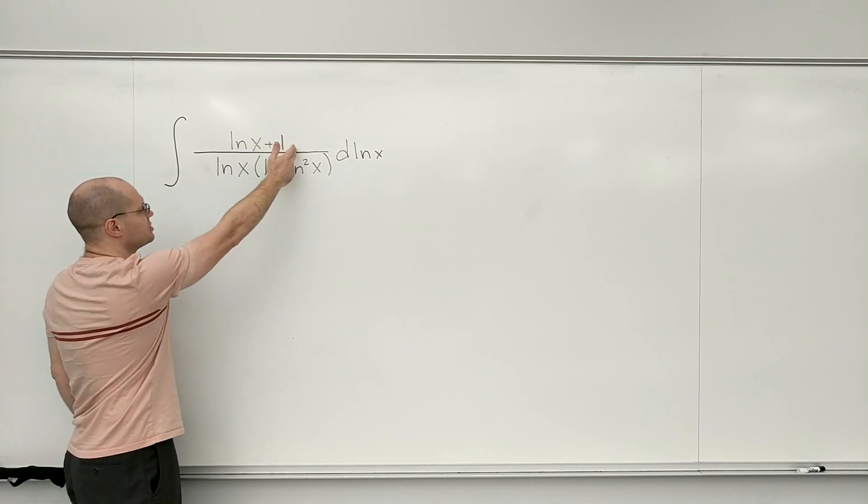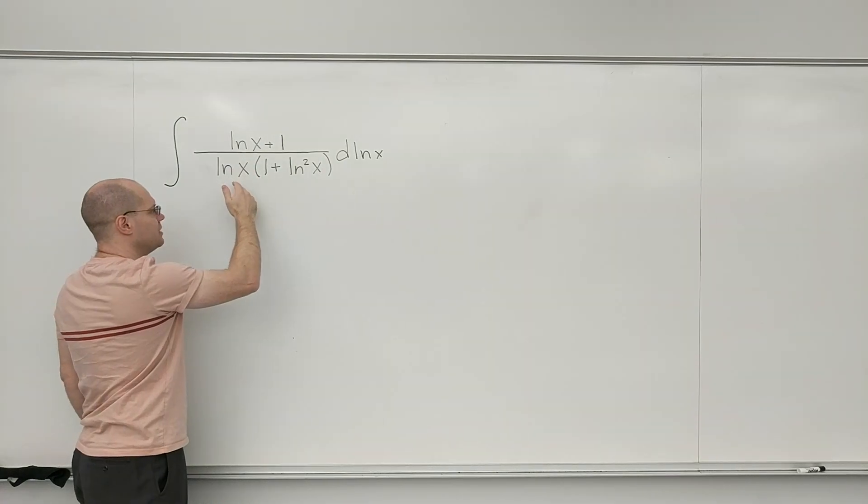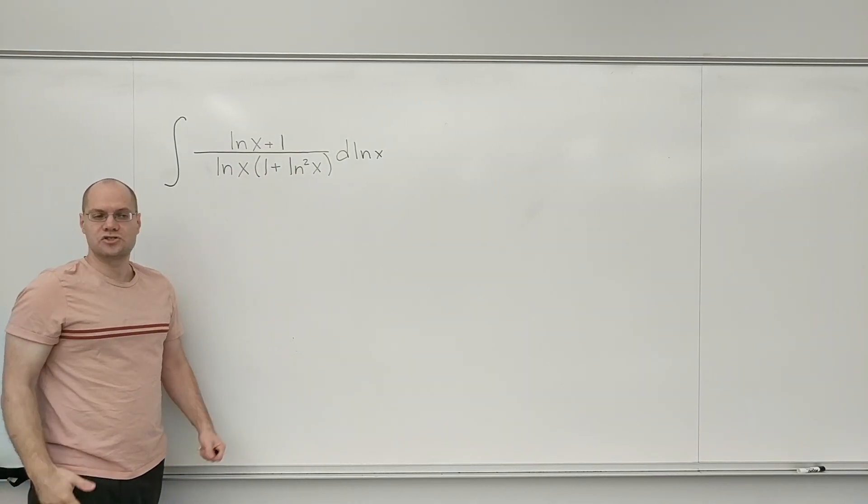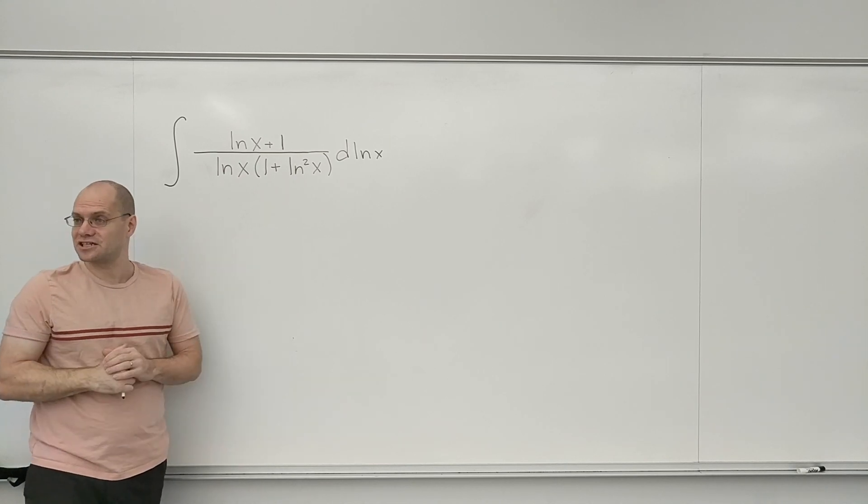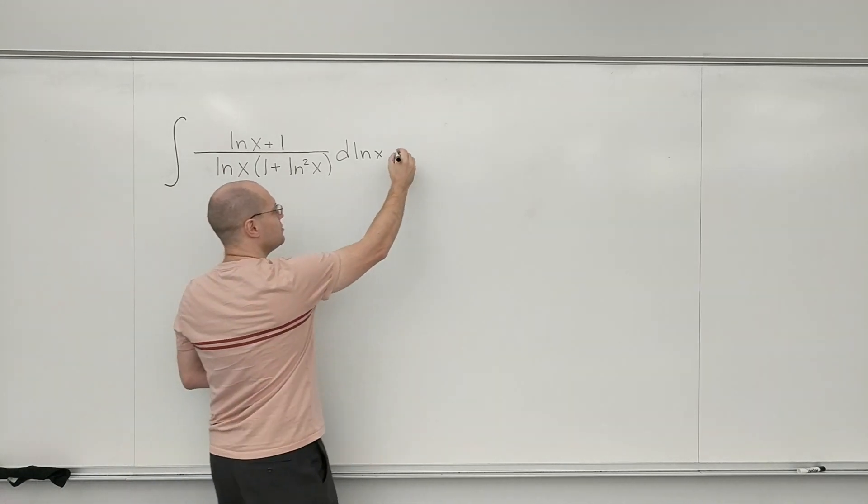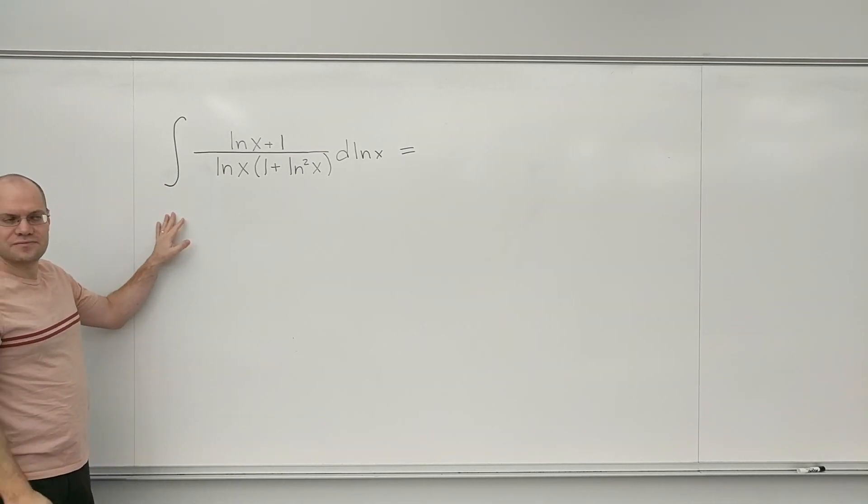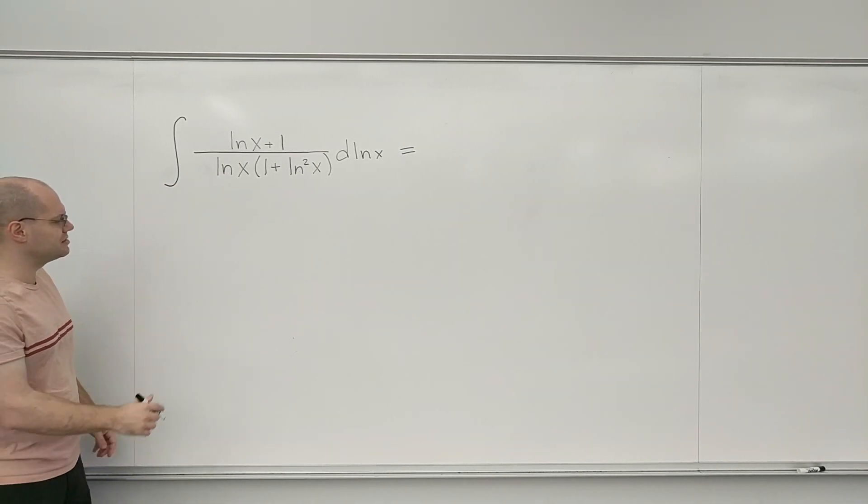And so what I have is u plus 1 divided by u times 1 plus u squared. So a complicated rational fraction. So I won't even continue here. I'll continue working with that fraction. No need to drag the integral signs with us.